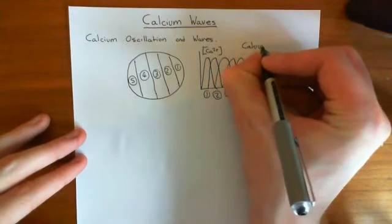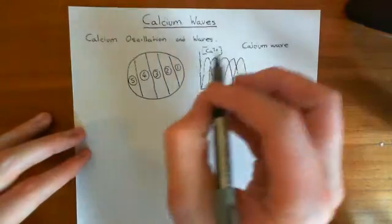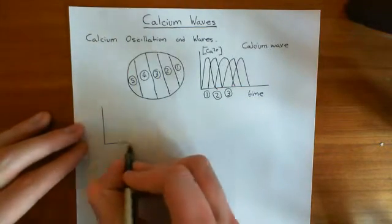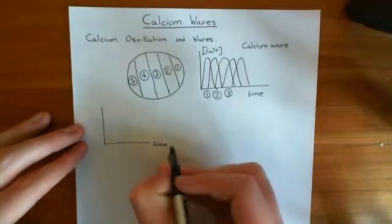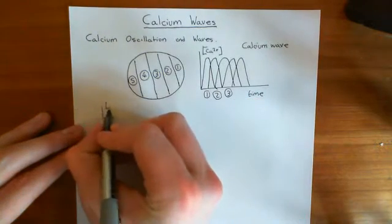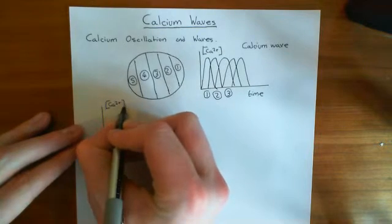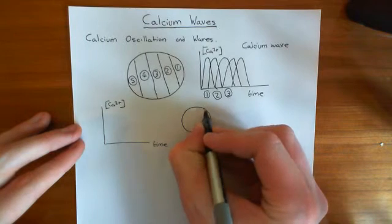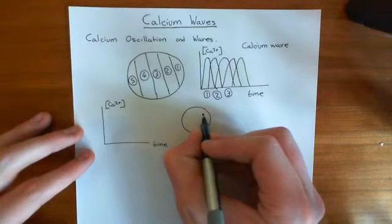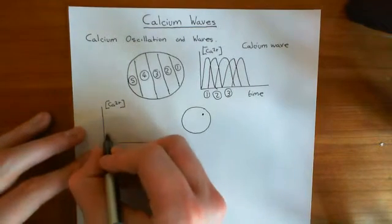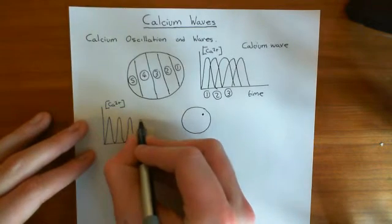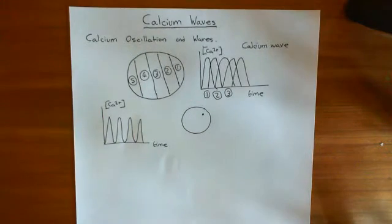A calcium oscillation is something more general than that. It refers to fixing a measuring device at a single portion of the cytoplasm and measuring calcium concentration there. If you plot calcium concentration at that single point and you get oscillations — calcium going up and down repeatedly — then that is what is meant by a calcium oscillation.